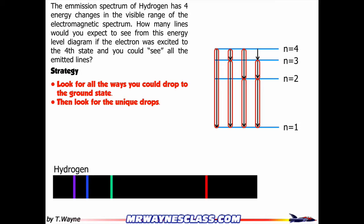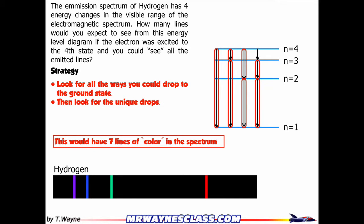So each one of these drops would be a spectral line. So that's 1, 2, 3, 4, 5, 6, 7 things that I circled. So I would have 7 lines in my emission spectrum.